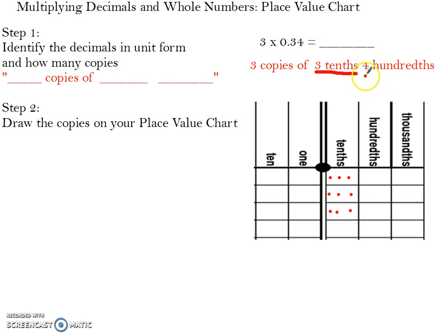Next, I'll move over to my hundredths column. I'm going to draw 4 copies, or 4 discs, 3 copies. There's 1 copy, 2 copies, and 3 copies.